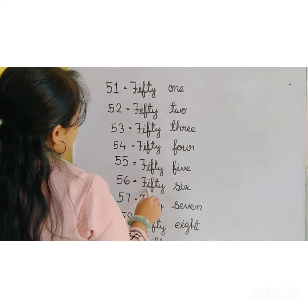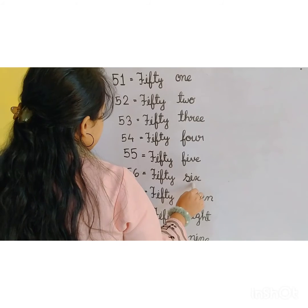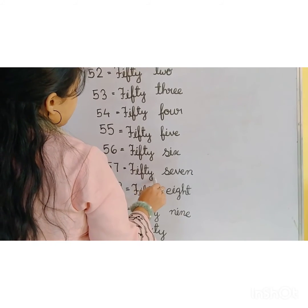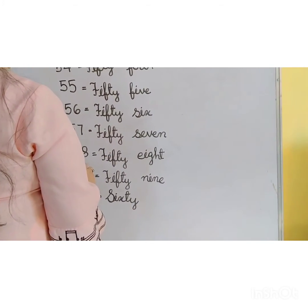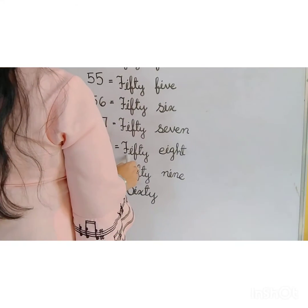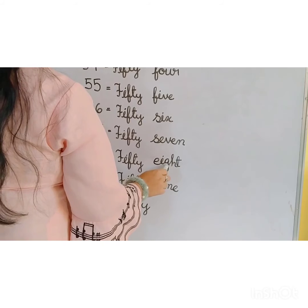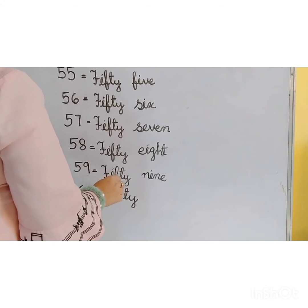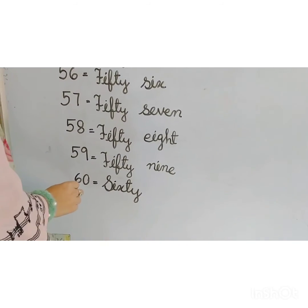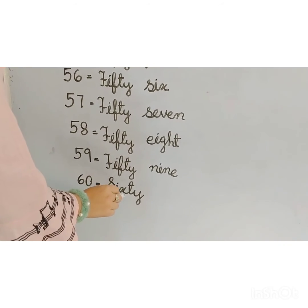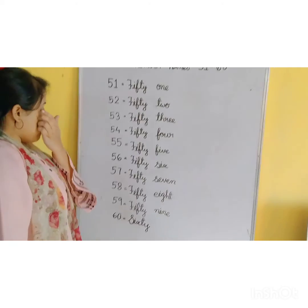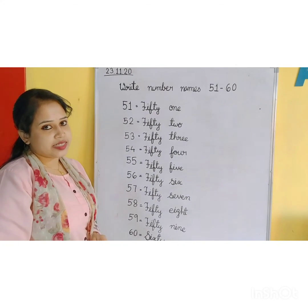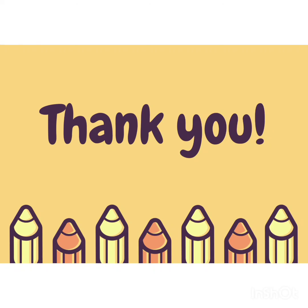56: F-I-F-T-Y S-I-X, 6, 56. 57: F-I-F-T-Y S-E-V-E-N, 7, 57. 58: F-I-F-T-Y E-I-G-H-T, 8, 58. 59: F-I-F-T-Y N-I-N-E, 9, 59. 60: S-I-X-T-Y, 60. Thank you.